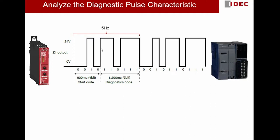How do we get 5 Hz? If you do a simple calculation, these 10 bits require 2 seconds of period to complete. So that means in one second it will have 5 bits, which means it's 5 Hz. This diagnostic pulse cycle keeps repeating itself — one cycle is followed by another cycle and so on.